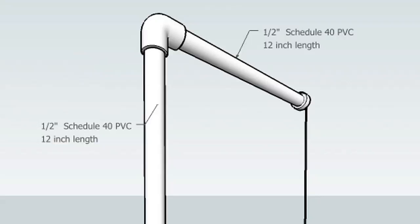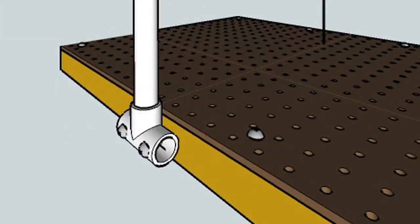The height and depth of the cutter will be dependent upon the dimensions that you chose for your specific tabletop cutter. Pictured here, the height and depth of the PVC arms are 12 inches in length. To attach the overarm assembly to the wooden base, a ½ inch schedule 40 PVC T-coupler is used.